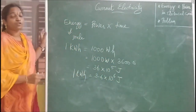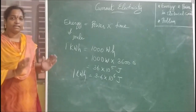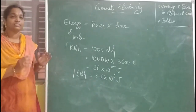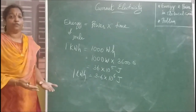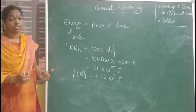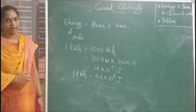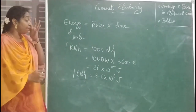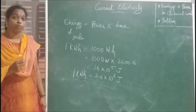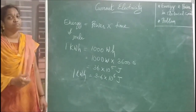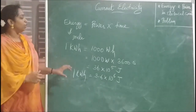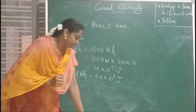So we have clearly studied electric power and electric energy. Electric power is the rate of doing work. Electric energy is the capacity to do work. Power is represented in the unit watt, and energy is represented in joules. Now we are going to do a problem related to that.